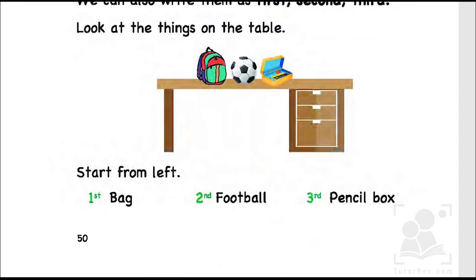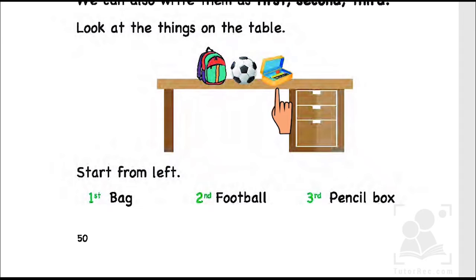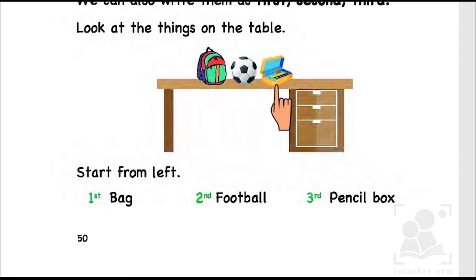Starting from left: first is a bag, second is a football, third is a pencil box. So this is about placing or positioning of objects. This is why we use ordinal numbers.